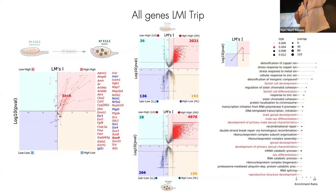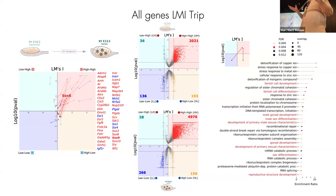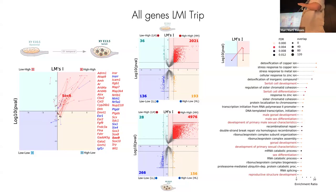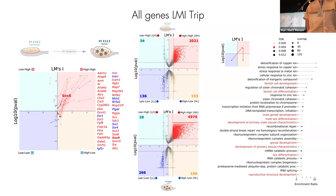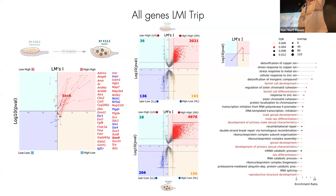Throwing those 720 genes into GO term analysis, we find all the expected terms: Sertoli cell development, male gonad, etc. But the method is agnostic at the start — we also get copper ions, metal ions. We think this is because many enzymes being activated during this process require cofactor ions. Interestingly, in other branches of life — amphibians and reptiles — ions in the environment, water temperature, etc., can determine sex. We also find RNA processing terms, which Dario is very interested in.